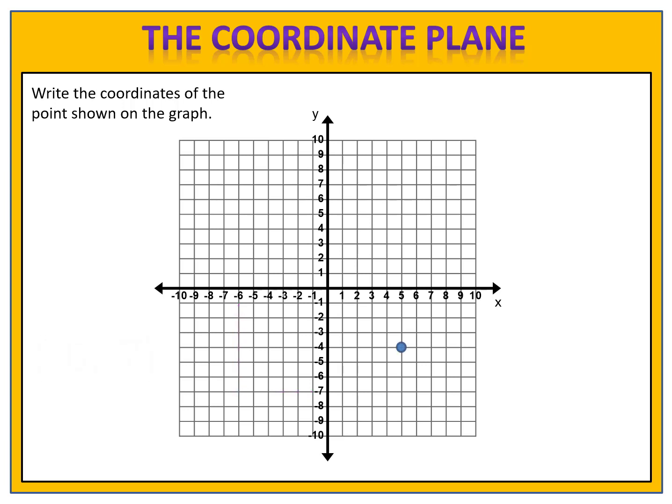How about this point in the fourth quadrant? Can you write its coordinates? Please pause the video and give it a try. We begin by looking at the x-axis — we are at 5. We then look at the y-axis — we're at negative 4. X is 5, y is negative 4, so we have the point 5 comma negative 4.